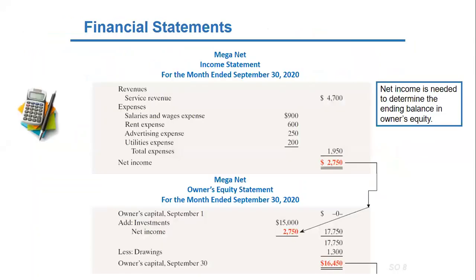We start first with the income statement. It presents the revenues and expenses and resulting net income or net loss for a specific period of time. Net income results when revenues are greater than expenses, and net loss occurs when expenses are greater than revenues.